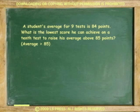One more example. A student's average for 9 tests is 84 points. What is the lowest score he can achieve on a tenth test to raise his average above 85 points? In other words, his average is greater than 85. Make L the lowest score he could get. If the total number of points for 9 tests is 756, then the total number of points for 10 tests is 756 plus L. And the equation 756 plus L divided by 10 is greater than 85 defines the new average.